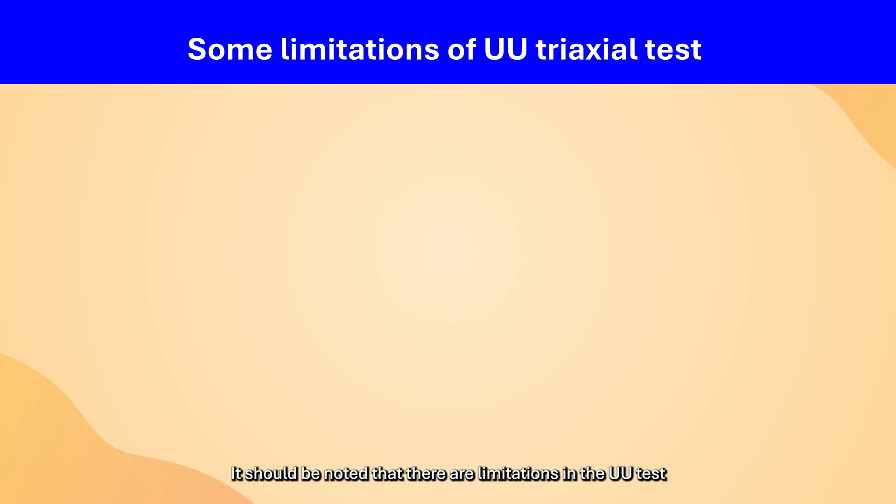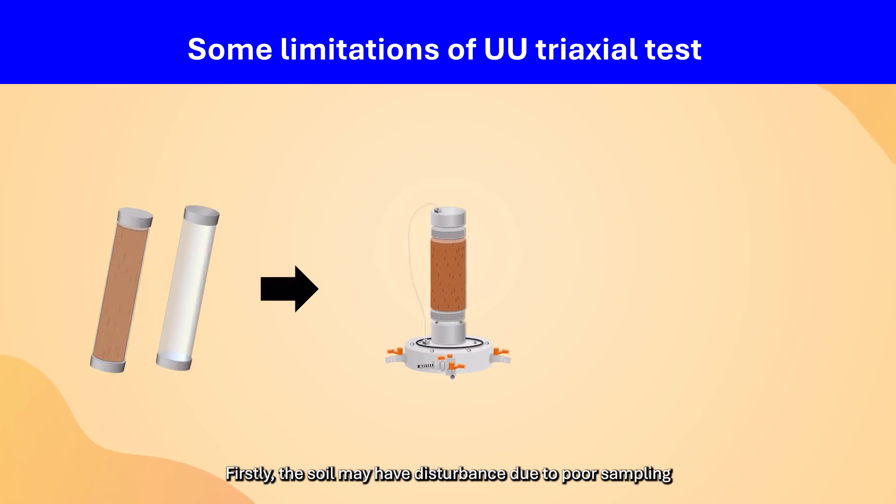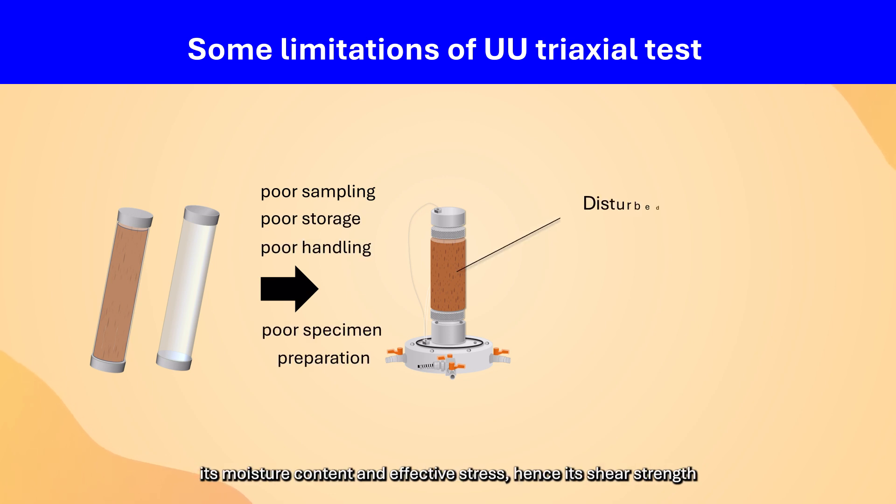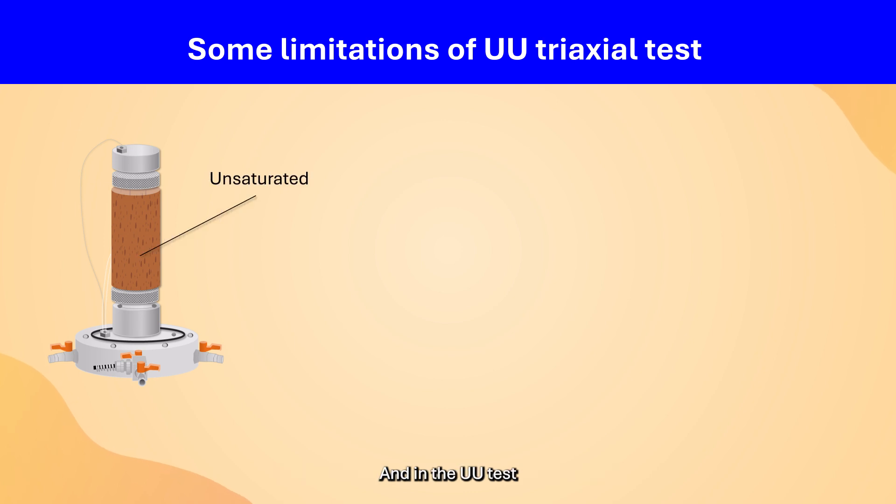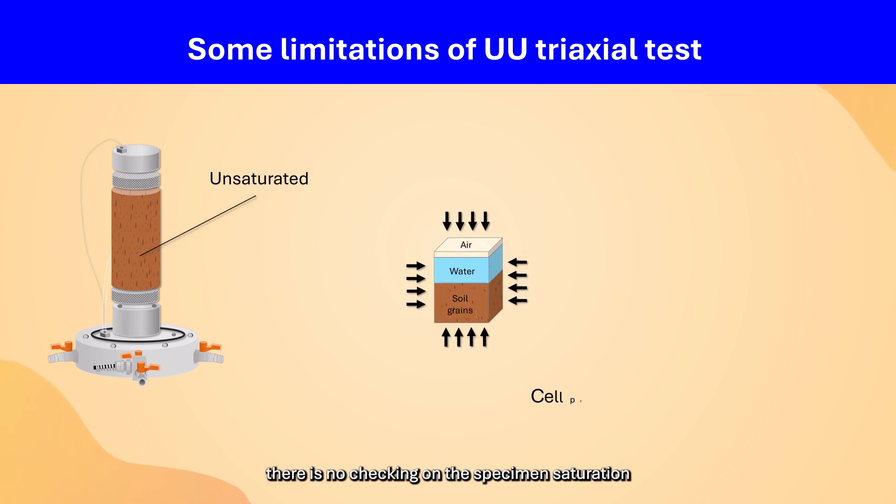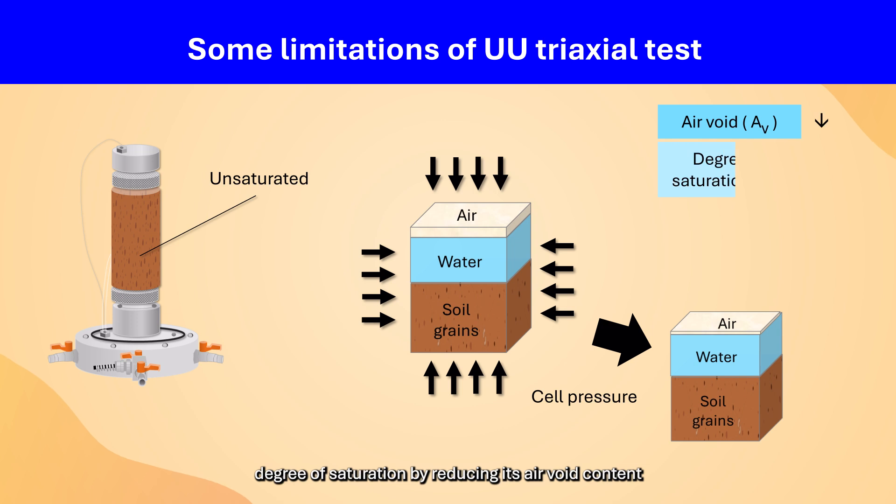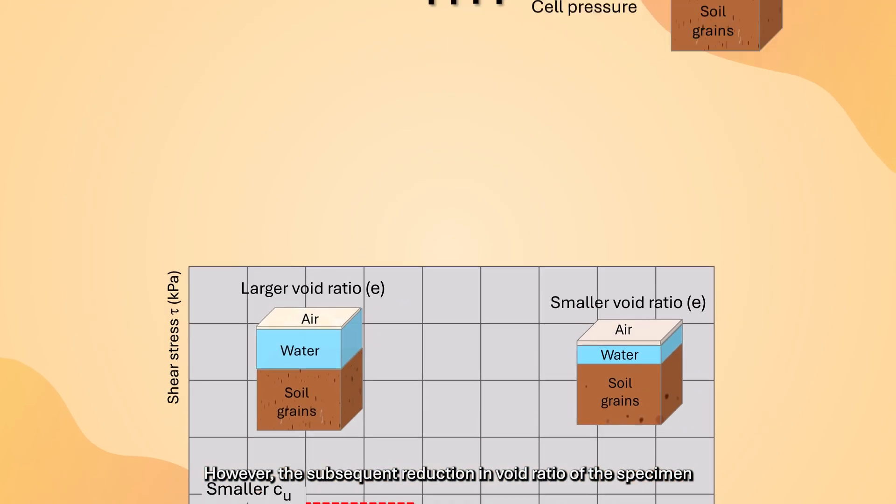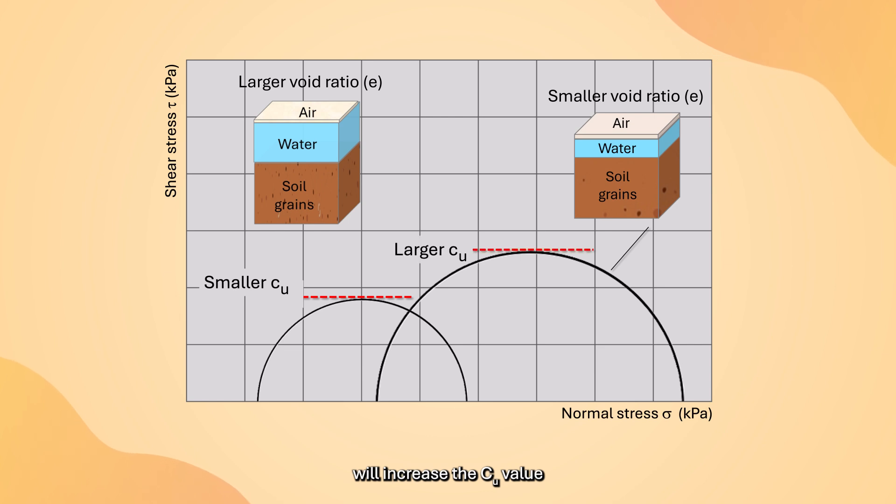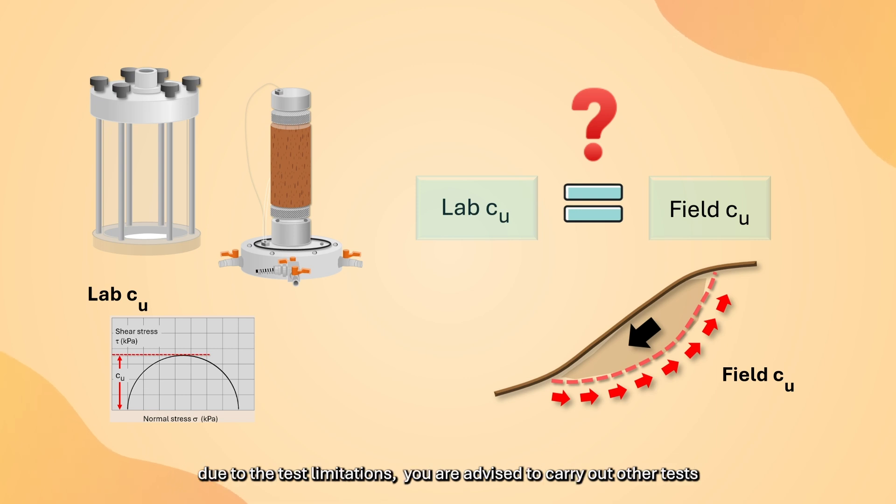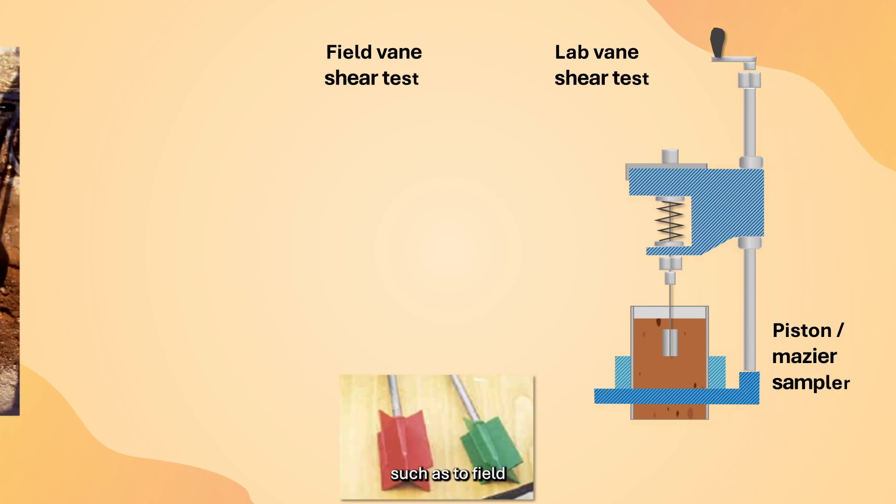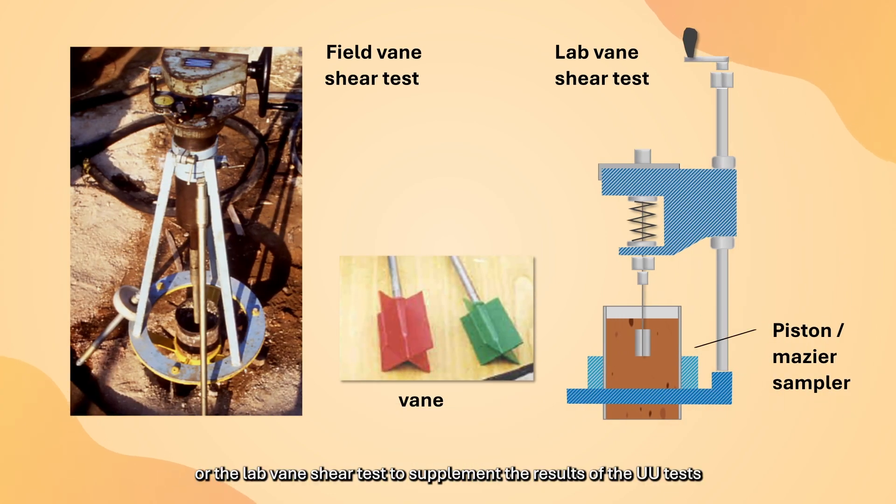It should be noted that there are limitations in the UU test. Firstly, the soil may have disturbance due to poor sampling, storage, handling, and specimen preparation, which will change its moisture content and effective stress, hence its shear strength. Secondly, the soil may not be 100% saturated and in the UU test, there is no checking on the specimen's saturation. A large cell pressure can be applied to increase the specimen's degree of saturation, however, the subsequent reduction in void ratio will increase the Cu value. As the Cu value obtained may not truly reflect the soil's in-situ undrained shear strength, you are advised to carry out other tests such as the field or lab vane shear test to supplement the result of the UU test.